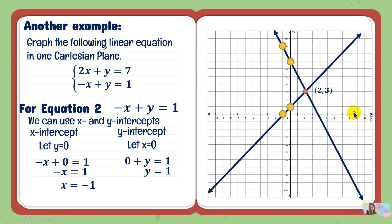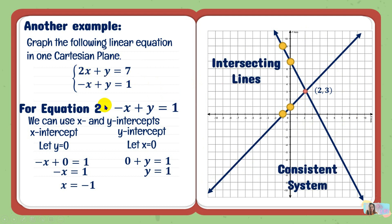The lines are intersecting again, so this system is a consistent system. Remember: intersecting lines means a consistent system, parallel lines means inconsistent, and coinciding lines means dependent.